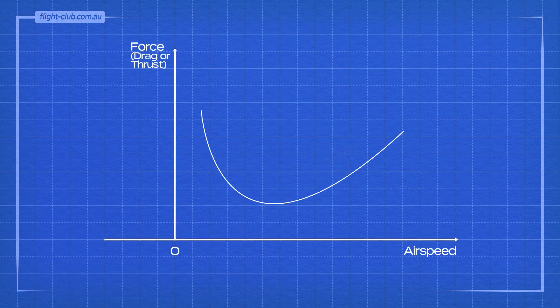To minimise drag for best endurance, the jet aeroplane must fly at the minimum drag speed, where total drag is at a minimum. This is also the speed for best lift-to-drag ratio and maximum excess thrust.